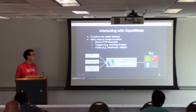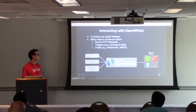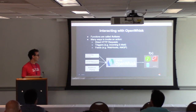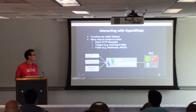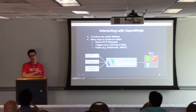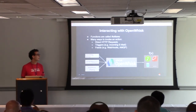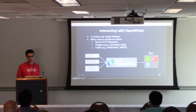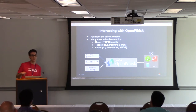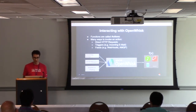To interact with OpenWhisk, functions are called actions, and there are many ways you can invoke an action. You don't have to make a direct HTTP request — you can define triggers, for example whenever an email comes in, or feeds such as whenever someone pushes to a GitHub repository. You can also use AMQP when a message is received. All of this scales with Docker containers, spinning up multiple instances of your function to manage demand.